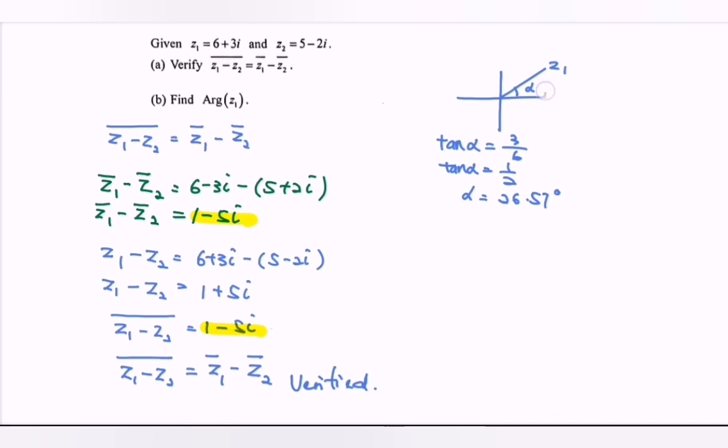Next is to find the argument. The argument of z sub 1 is located here, so the argument of z sub 1 equals 26.57 degrees. Expressed in the form of radians, the argument of z sub 1 equals 0.464 radians.